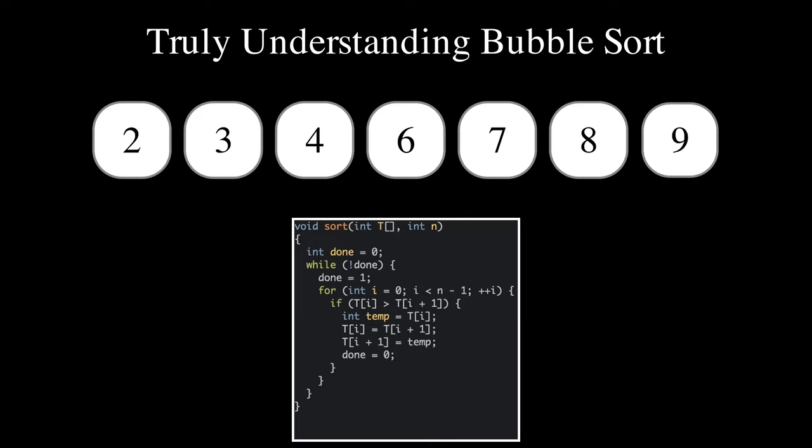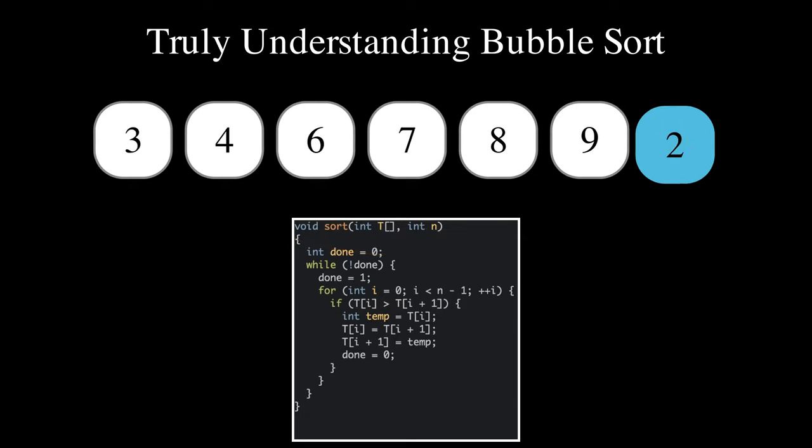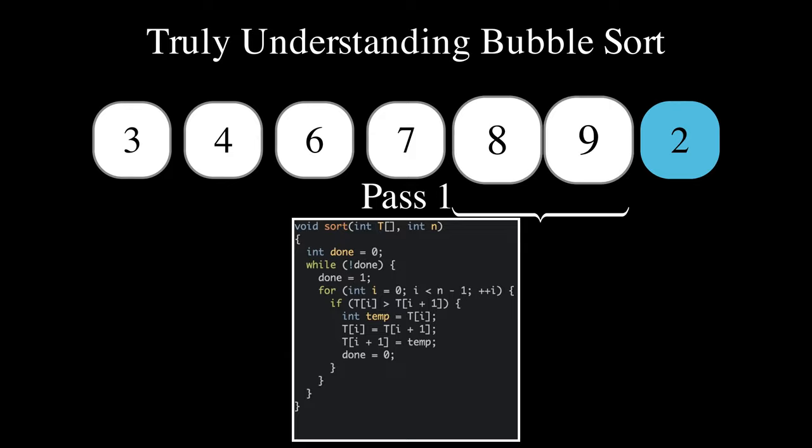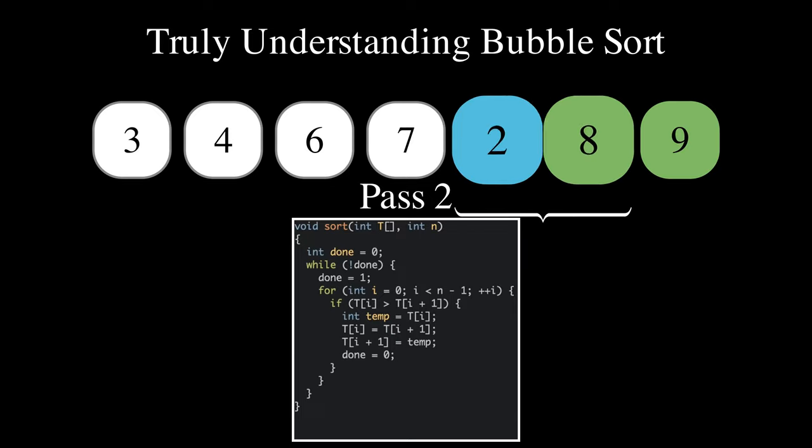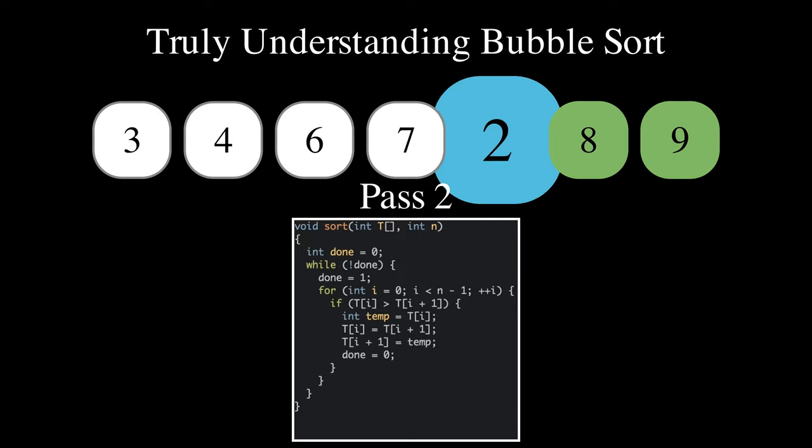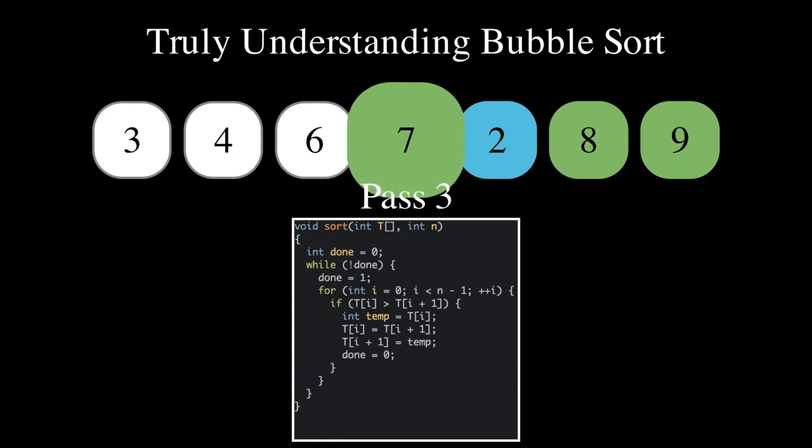However, this worst case running time is also attained when even just the smallest value in a sorted array is displaced and moved towards the end of the array. For such an input, the first pass moves the largest element to its final position, but the smallest value is only brought forward one position. The second pass moves the second largest element to its final position, but only brings forward the smallest value by one position. This pattern repeats with each pass.